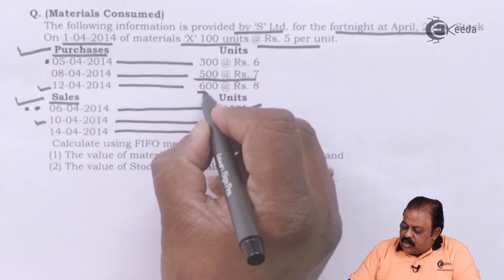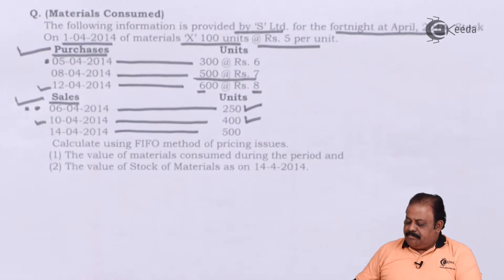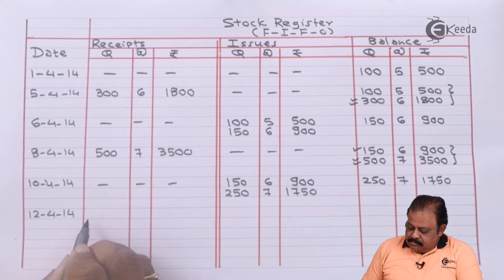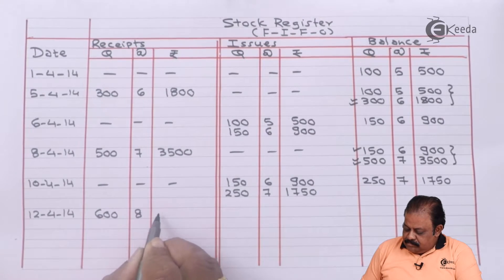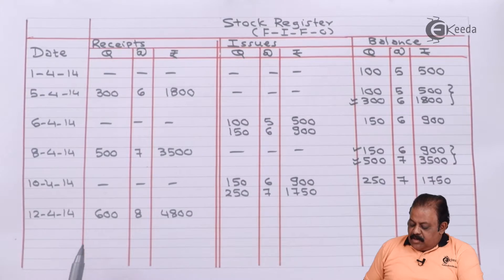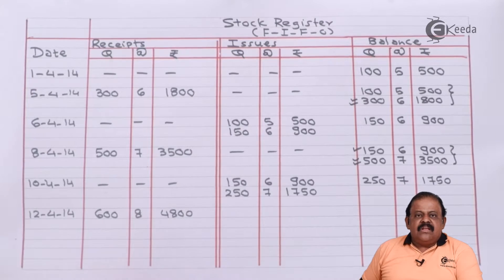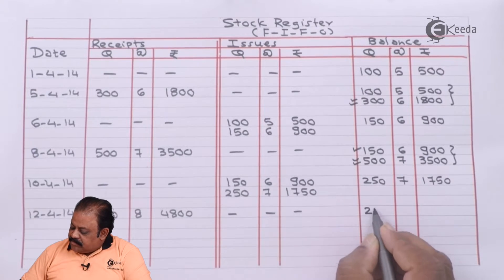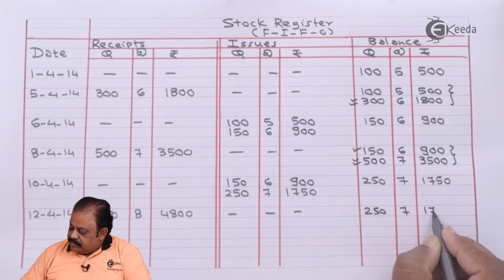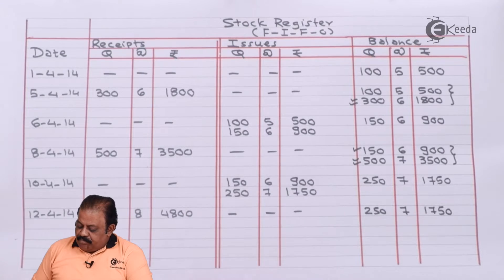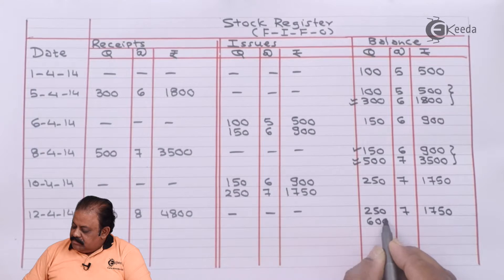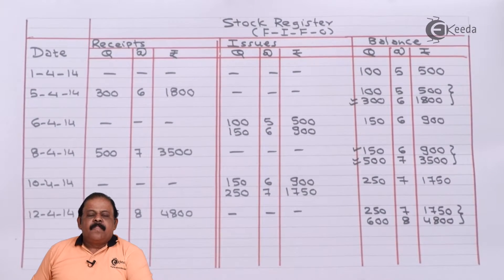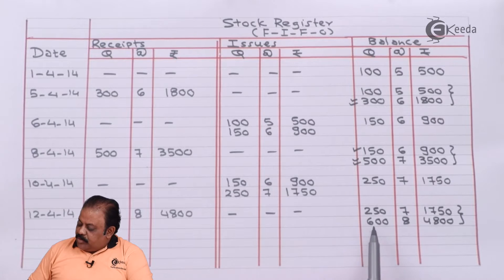On 12th April there is a purchase of 600 units at the rate of Rs.8, amount Rs.4800. While recording the closing stock, we first have 250 units at Rs.7 (Rs.1750), then add the fresh purchase of 600 units at Rs.8 (Rs.4800). We now have two stocks: 250 units and 600 units.